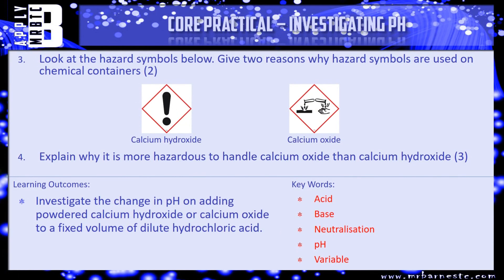Let's move on to questions 3 and 4. Question 3 says: look at the hazard symbols below and give two reasons why hazard symbols are used on chemical containers. Question 4, which is a 3-marker, says: explain why it is more hazardous to handle calcium oxide than calcium hydroxide. Use the state symbols to help you. Pause the video and have a go.